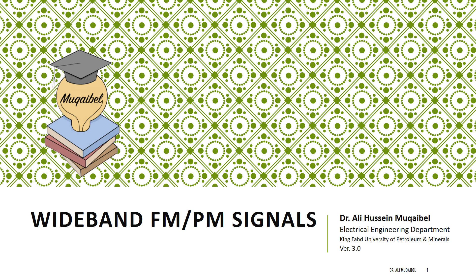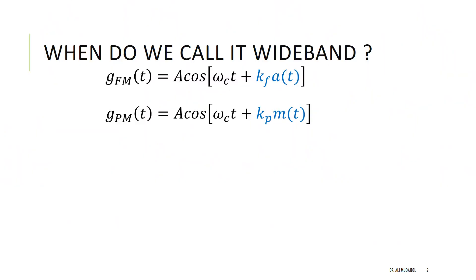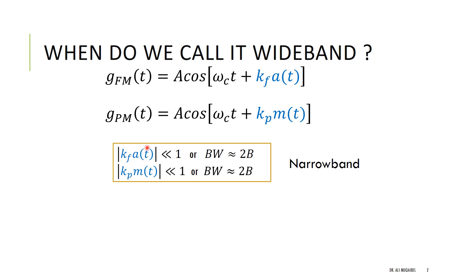Today's lecture is on wideband angle modulated signals, or wideband FM and PM signals. The general form for a wideband FM signal is a cosine of omega_c*t plus k_f times the integral of the message a(T). For phase modulated signals, the phase term is controlled by the message: k_p times m(T). We have two scenarios for these signals — wideband or narrowband — based on the deviation.